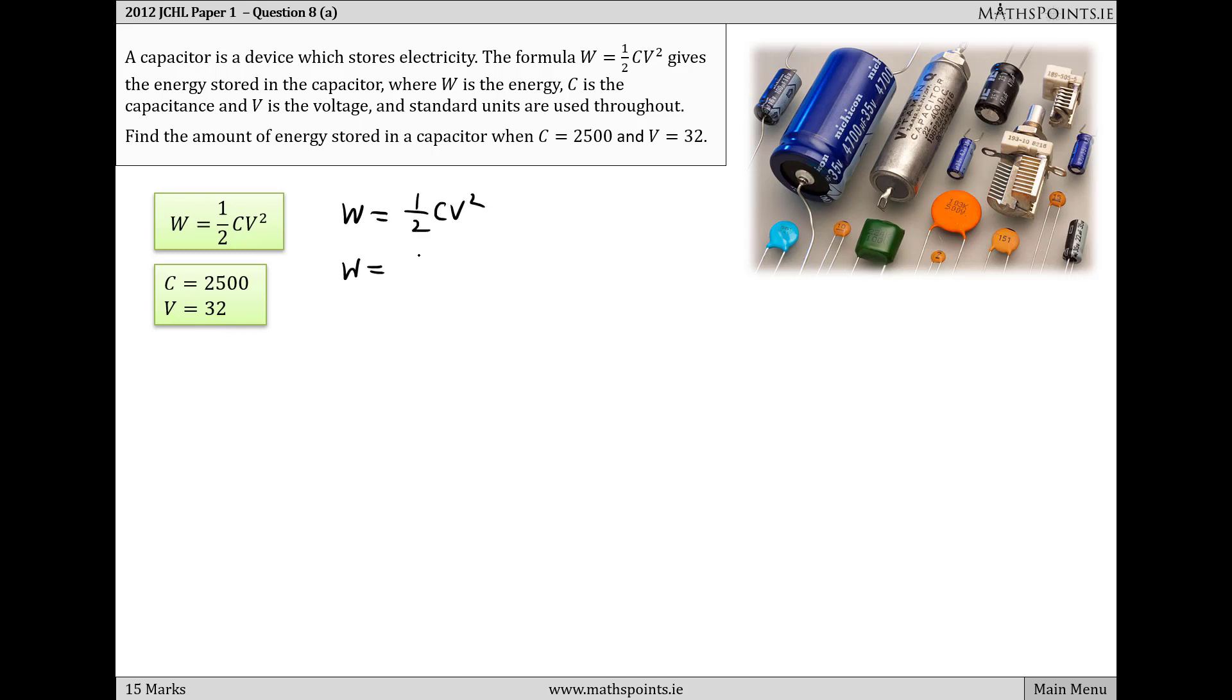So W will be equal to a half, C equals 2500, and V equals 32 squared. If we throw this into the calculator, we get that the energy is 1 million 280 thousand.